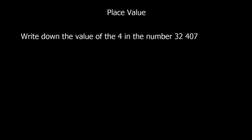Here's another question: write down the value of the 4 in the number 32,407. Again we can split our number up into its parts. This time we've got 30,000, and we've got 2000, and we've got 400.